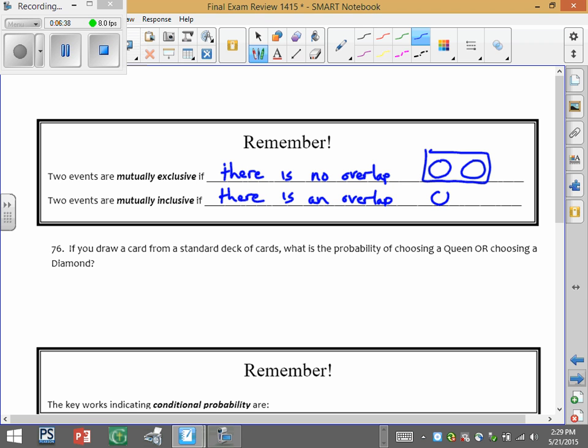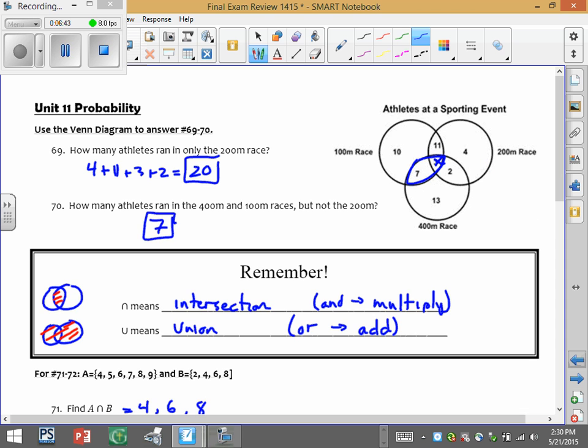So here, that would look like this. So the previous page, these things, the 100-meter and the 200 are mutually inclusive because there's an overlap.